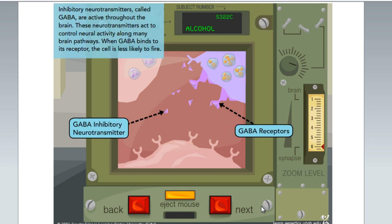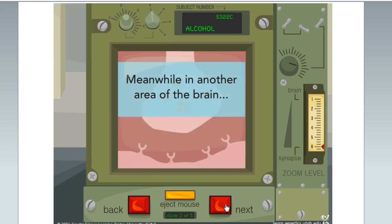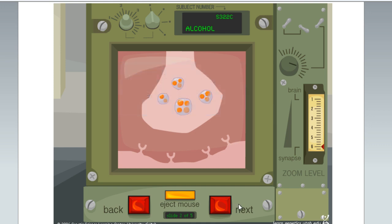These neurotransmitters act to control neural activity along many brain pathways. When GABA binds to its receptor, the cell is less likely to fire. Meanwhile, in another area of the brain, another neurotransmitter called glutamate acts as the brain's general-purpose excitatory neurotransmitter.